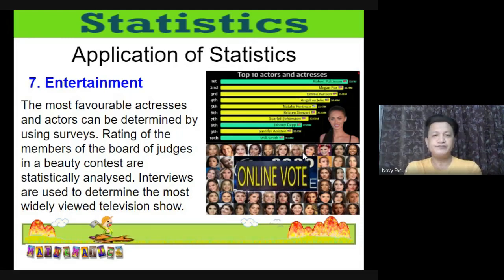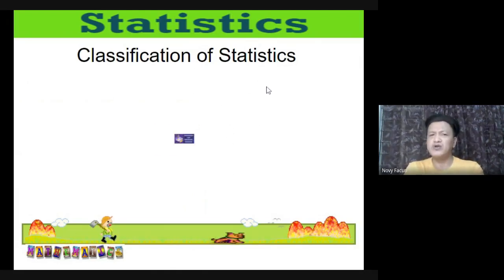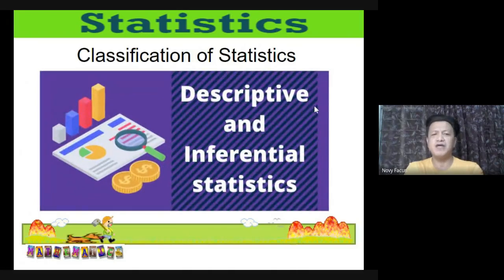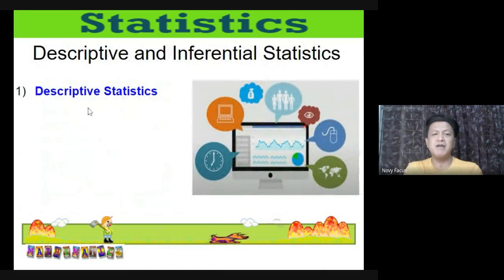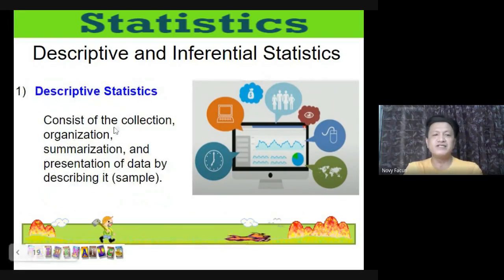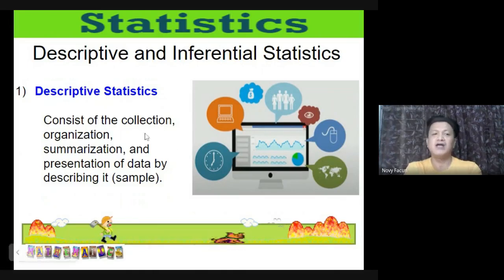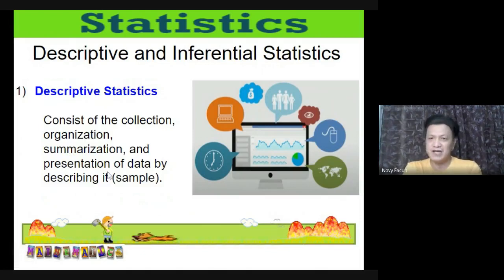In statistics, there are two classifications: descriptive and inferential statistics. Descriptive statistics — from the word 'describe' — consists of the collection, organization, summarization, and presentation of data by simply describing it, using charts, tables, and graphs.